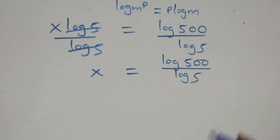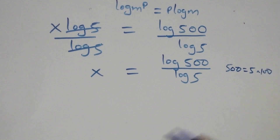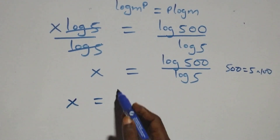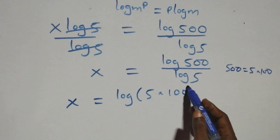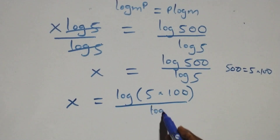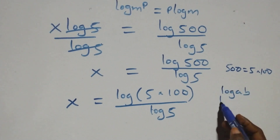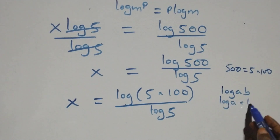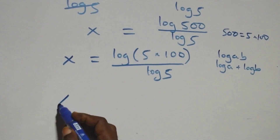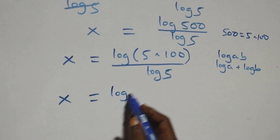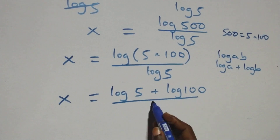The next step: 500 can be expressed as 5 times 100. So we have x equals to log of 5 times 100, over log 5. This follows the product law of logarithm: log a times b can be written as log a plus log b. So here we have x equals to log 5 plus log 100, all over log 5.